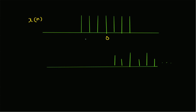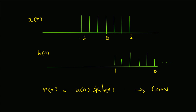Here, x[n] is not a causal signal — it starts at minus 3 and ends at plus 3. The impulse response h[n] is causal, starting at 1 and ending at 6. When we want to find the convolution of these two — that is y[n] = x[n] * h[n] — this can be determined using the MATLAB function CONV. However, to compute the time support we need to know the starting and ending location of y[n]. The starting location is given by the sum of the first time value of x[n] and the first time value of h[n].